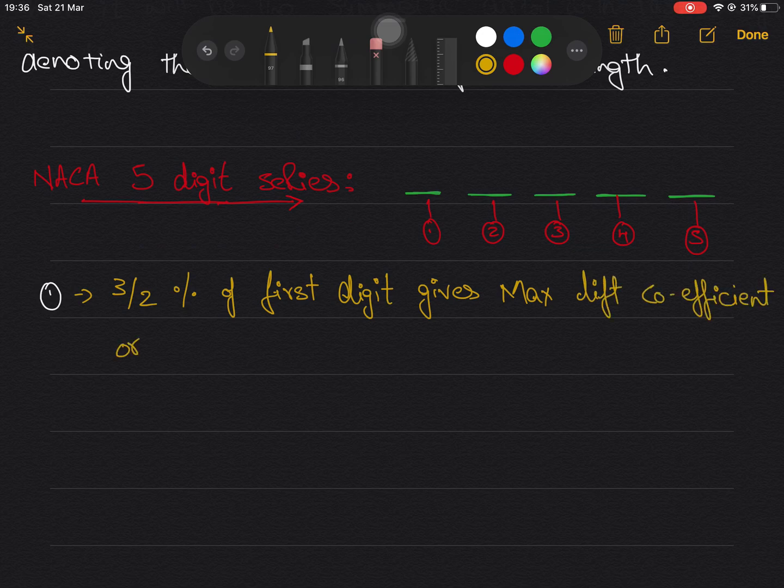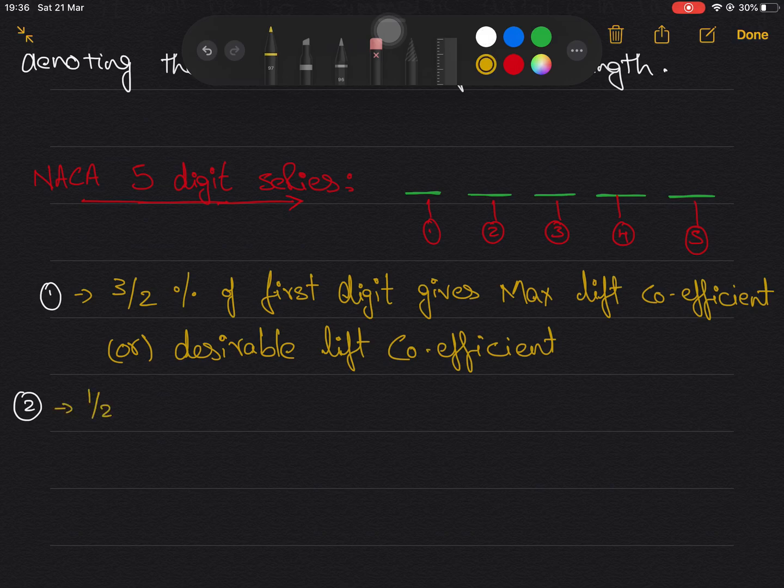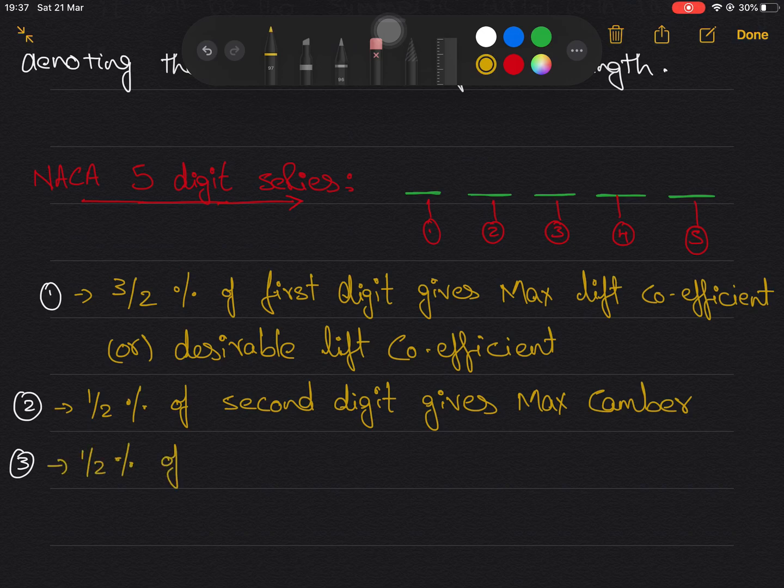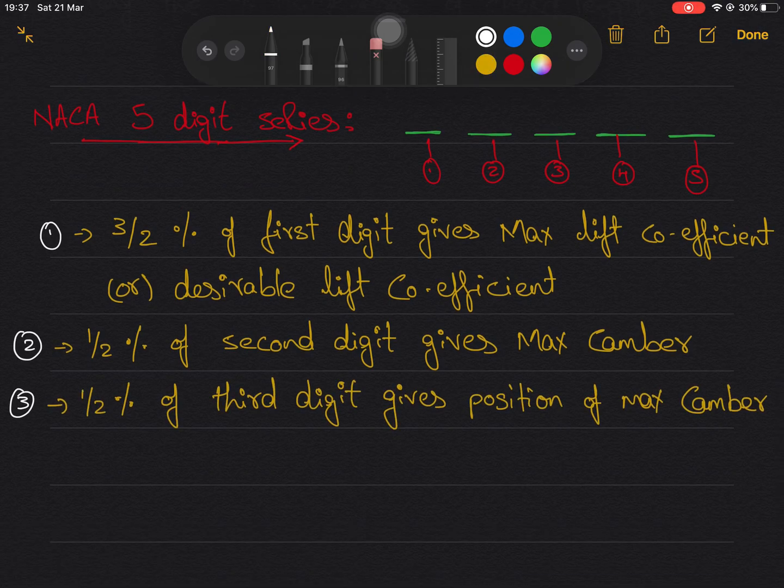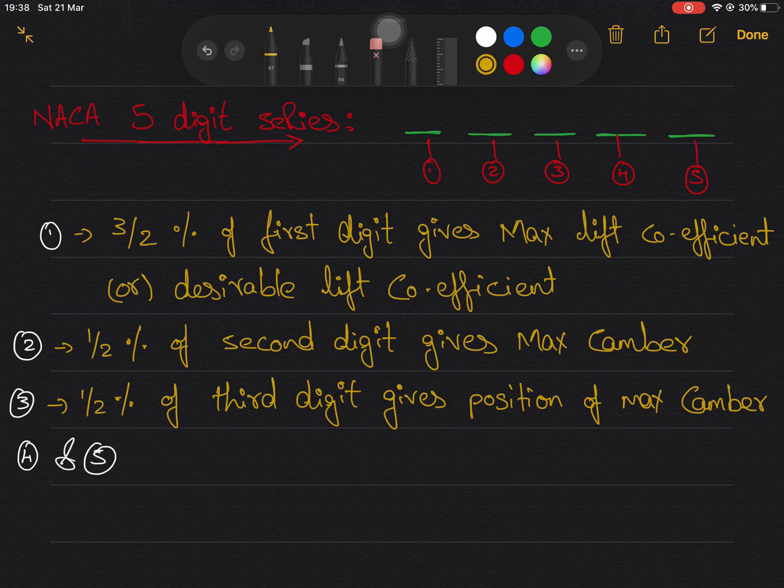Here in this five digit, three half of first digit gives the percentage chord of maximum lift coefficient. Half of second and third digit gives the percentage chord of maximum camber and position of maximum camber in tenths. Fourth and fifth digit gives the percentage chord of thickness of airfoil, which is same as in the four digit series.